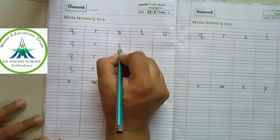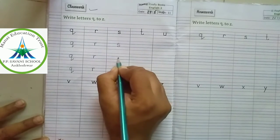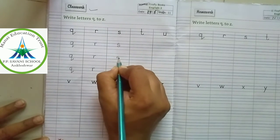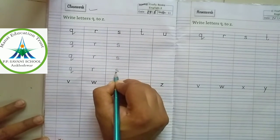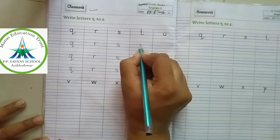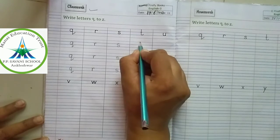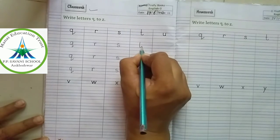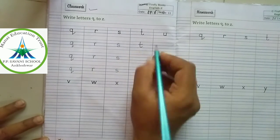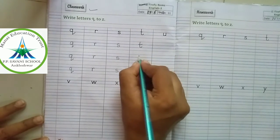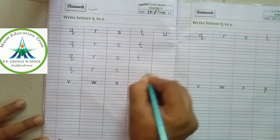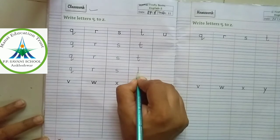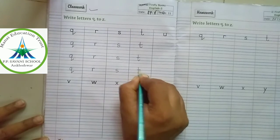S between two blue lines. S, S, S. T above three lines. T, T, T.